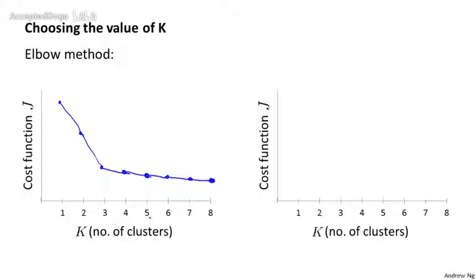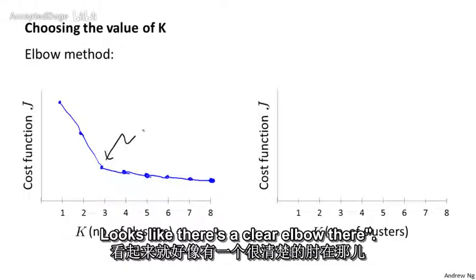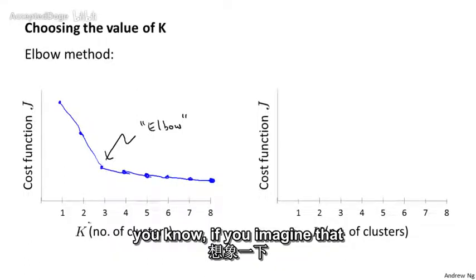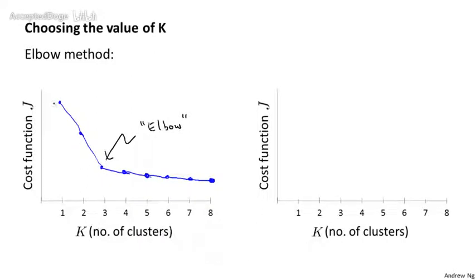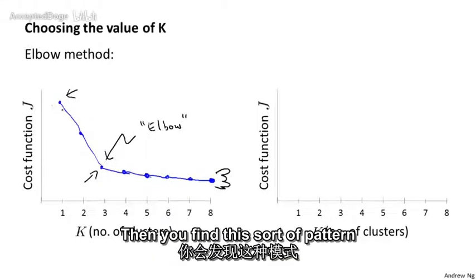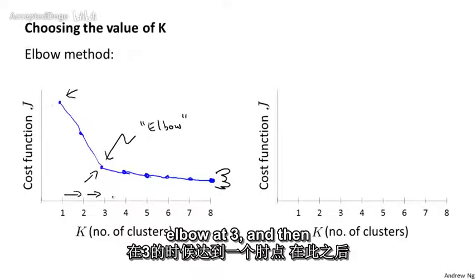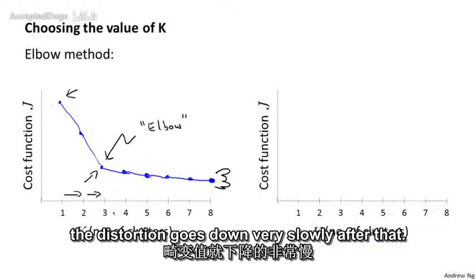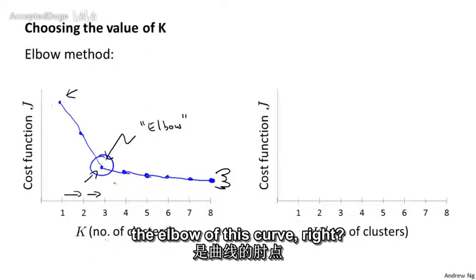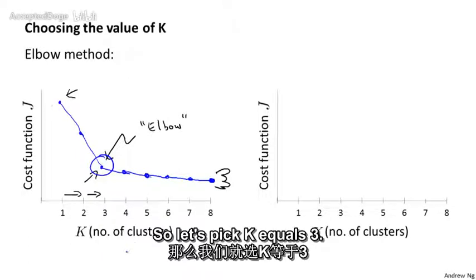We end up with a curve showing how the distortion goes down as we increase the number of clusters. If you look at this curve, the elbow method says: look at this plot — there's a clear elbow, by analogy to a human arm where you have your shoulder joint, elbow joint, and hand at the end. You find a pattern where distortion goes down rapidly from one to two and two to three clusters, then you reach an elbow at three, and distortion goes down very slowly after that. So using three clusters looks like the right number.